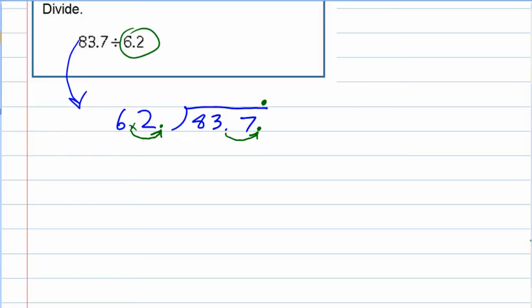So 62 goes in first to 83. 62 goes into 83 one time. So 1 times 62 is our 62. We can subtract. That gives us 1 and 2, so 21. Bring down that next digit. In this case 7. We have 217.